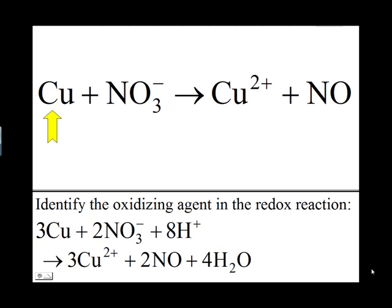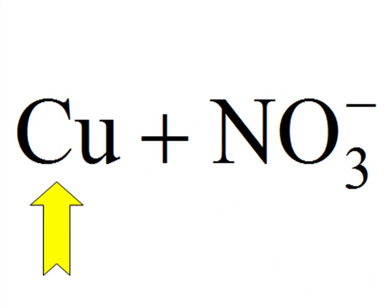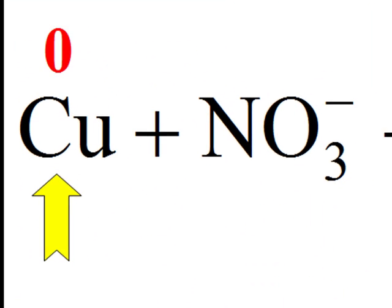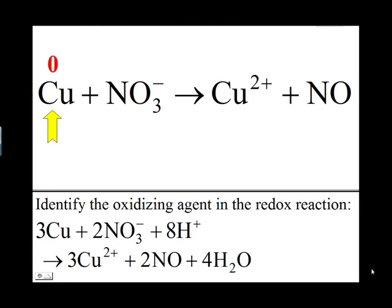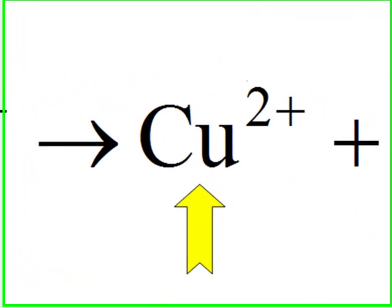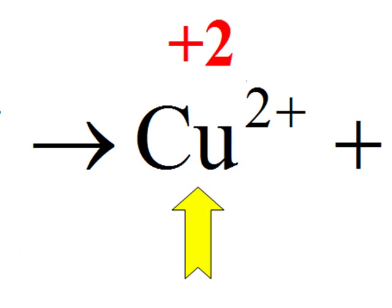Looking at the copper first, an atom of copper in elemental form has an oxidation number of zero. Looking at the ion Cu2+, the oxidation number is equal to the ion charge, which is positive 2.